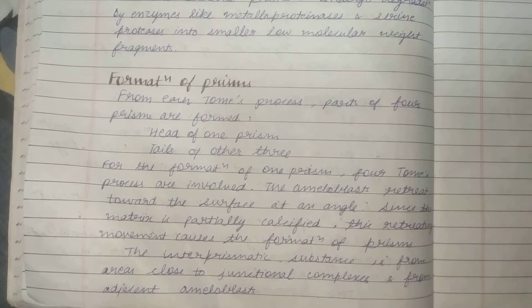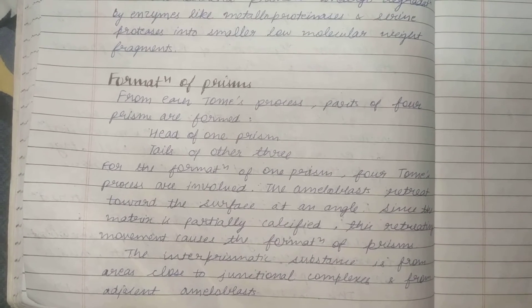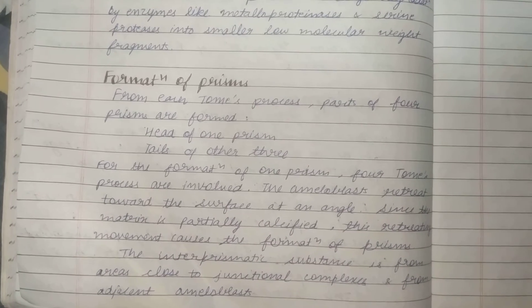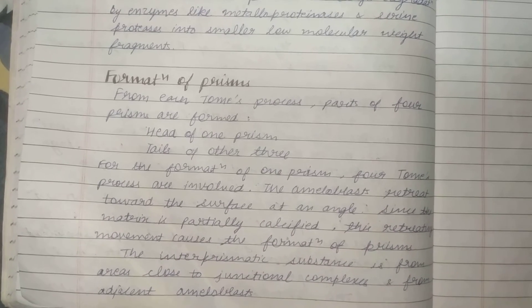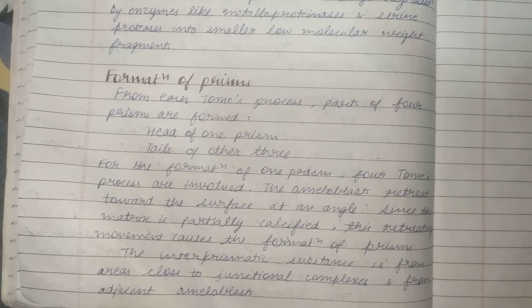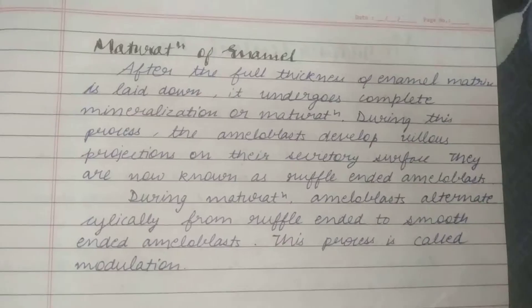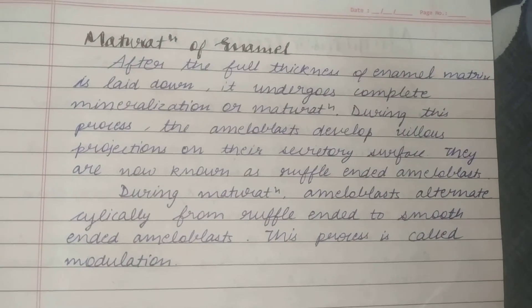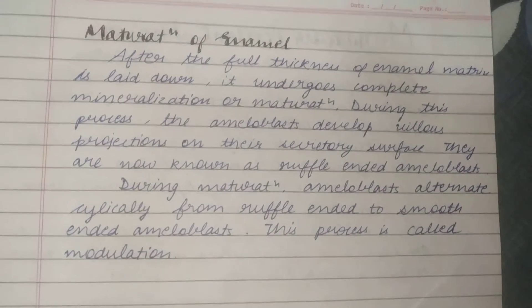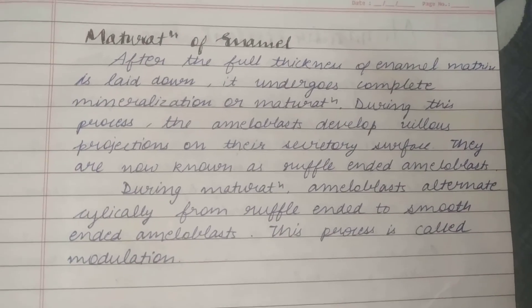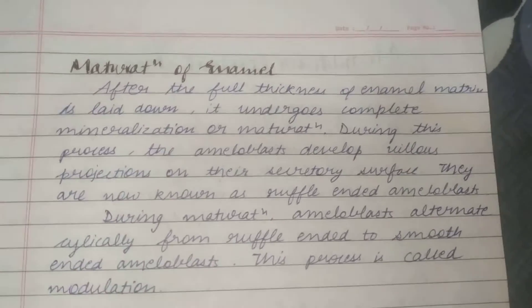The interprismatic substance is formed from the closed area near junctional complexes and from adjacent ameloblasts. Now, talking about the last topic — the maturation of enamel.